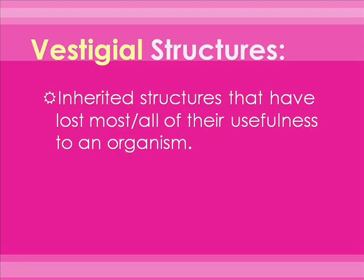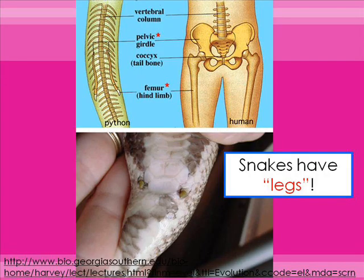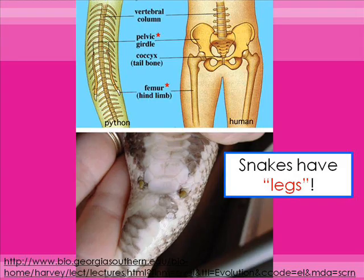Vestigial structures are not the opposite of homologous structures, as many students think. These are inherited structures that have lost most or all of their usefulness — or at least their original use. A creepy example is that snakes actually do have legs. When you dissect a snake and look at its skeleton, you can find very small femur-type bones. And when you lift up a snake, you can see tiny remnants of what used to be hind legs on its underside.